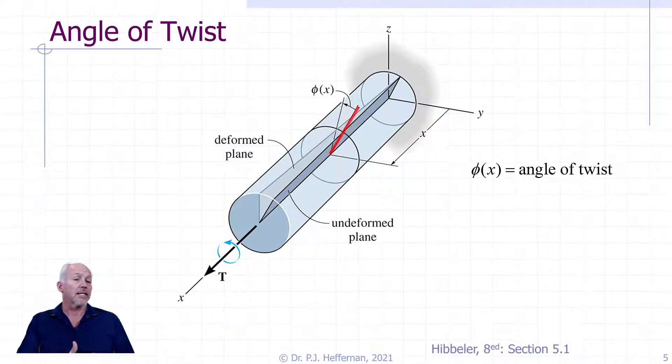What we can see is that the radial line remains a radial line, but has rotated after the torque is applied through an angle phi, and we see it marked on here as phi at x. This angle phi is referred to as the angle of twist. Note that it is a function of the distance x from the support, and it gets larger as the distance x increases, as we can see here on the diagram.